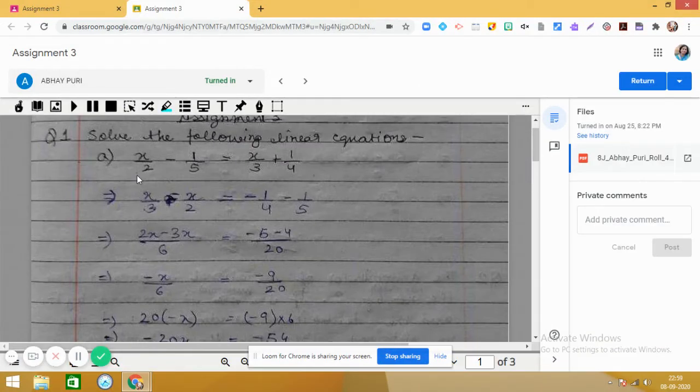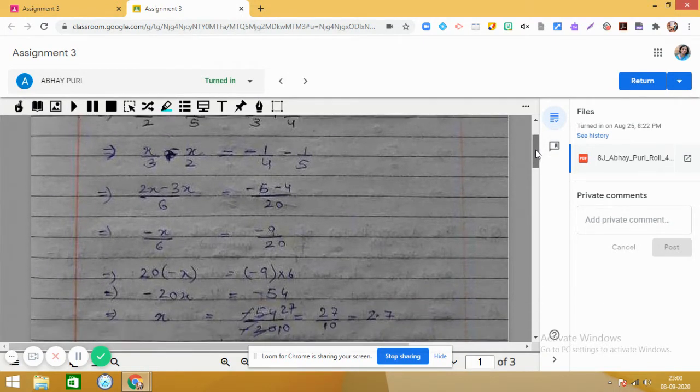The first part is x/2 - 1/5 = x/3 + 1/4. So what we can do is we can transpose the terms containing variables to one side and constants to the other side. So here we see that x/3 - x/2 = -1/4 - 1/5. This step is correct.